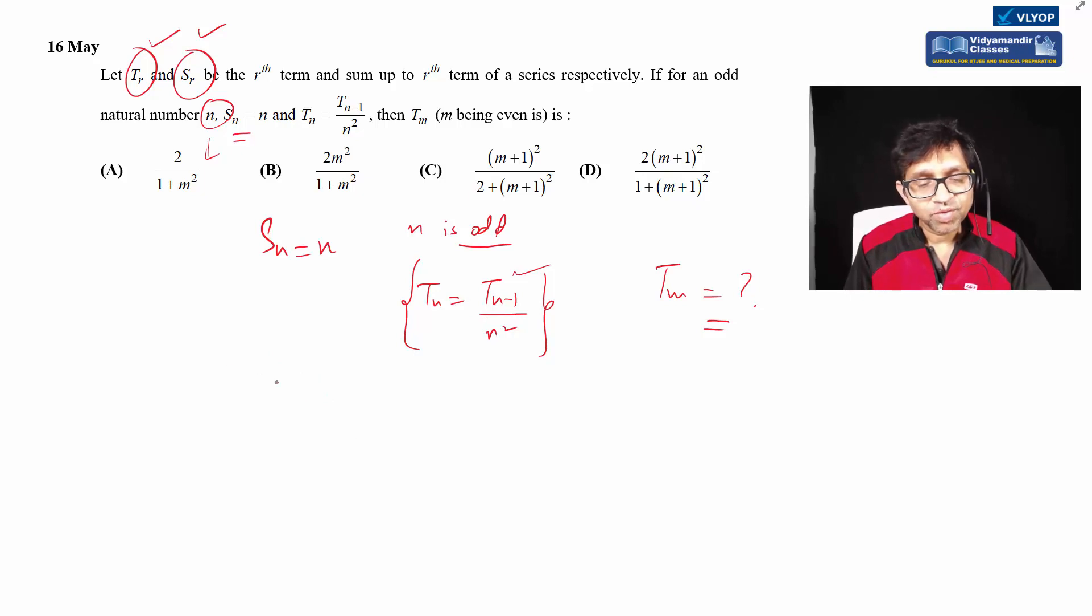You should know that when we have sum up to n terms, sn is nothing but sum of n minus one terms plus the nth term. The sum of n terms is the sum of n minus one terms plus the last term added. The last term is sum up to n terms minus sum up to n minus one terms. So we'll use this similar concept.